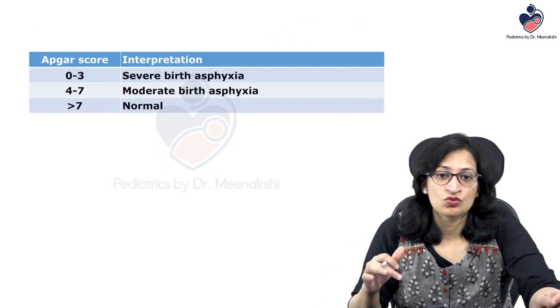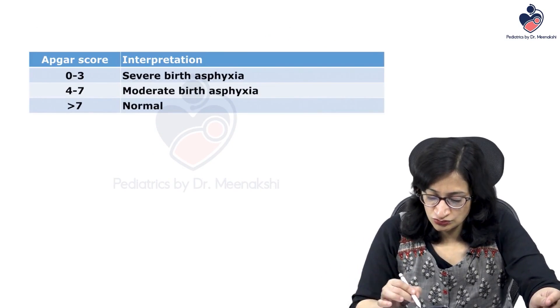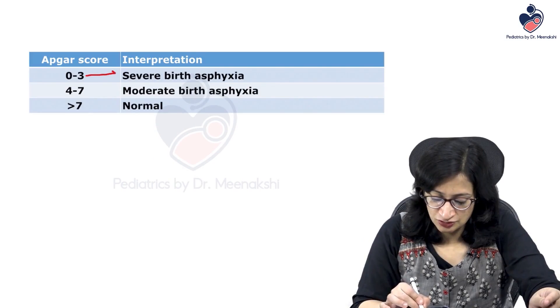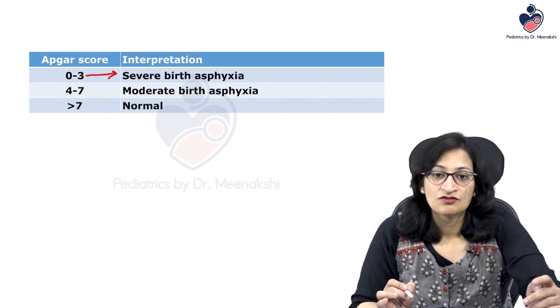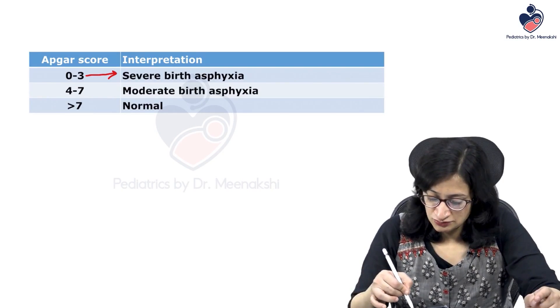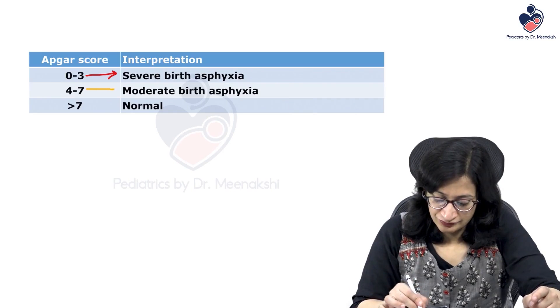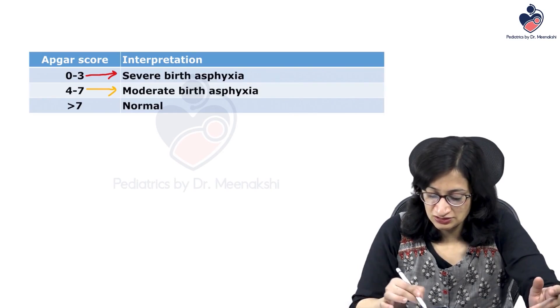Now, about the APGAR score, if the APGAR score is 0 to 3, it indicates severe birth asphyxia. 4 to 7 indicates moderate birth asphyxia and APGAR score more than 7 is normal.